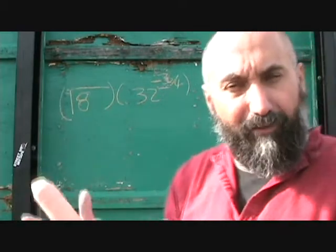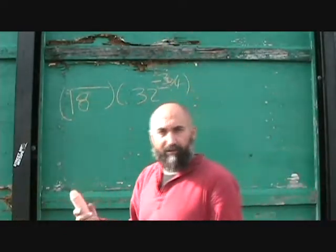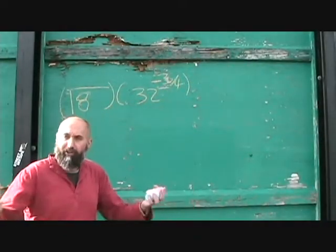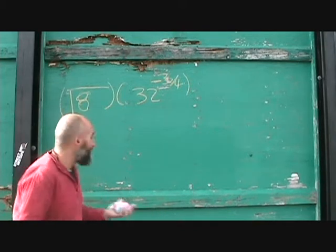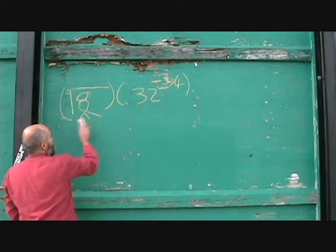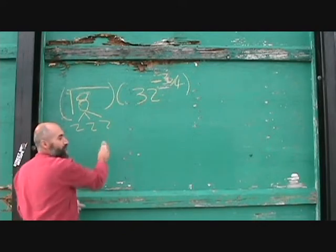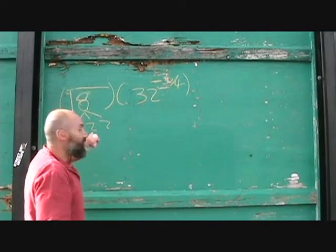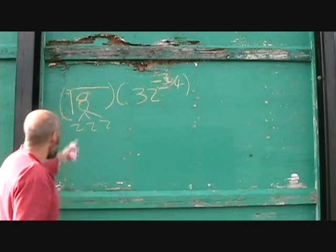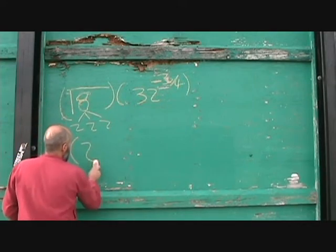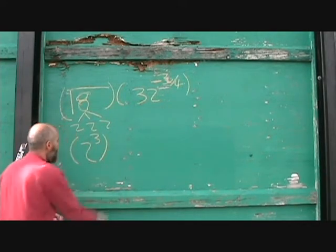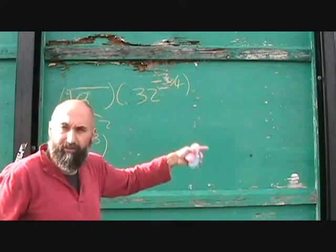Since I made up the question I know they reduce to the same base, but the only way to find that is to break it down to its prime factors. So let's break these down to their prime factors. 32 breaks down into 2 times 2 times 2, which is 2 to the power of 3. So the square root of 8 — 8 is 2 to the power of 3.